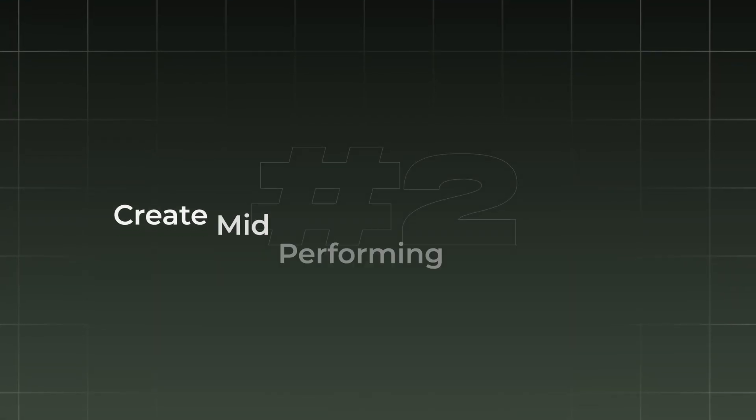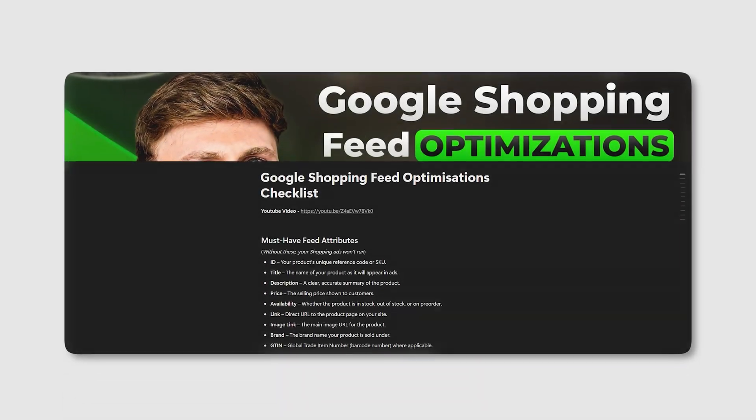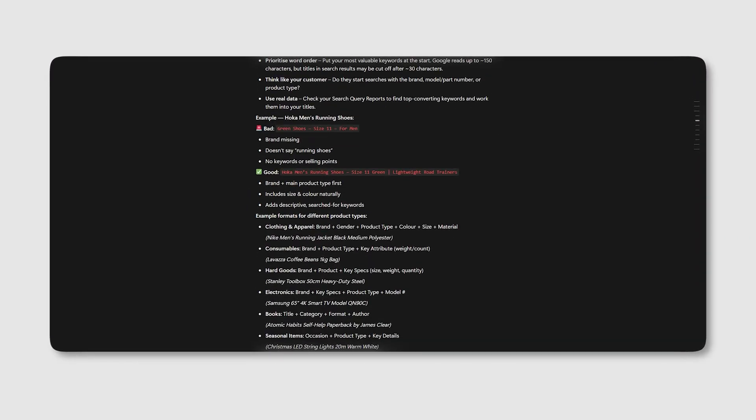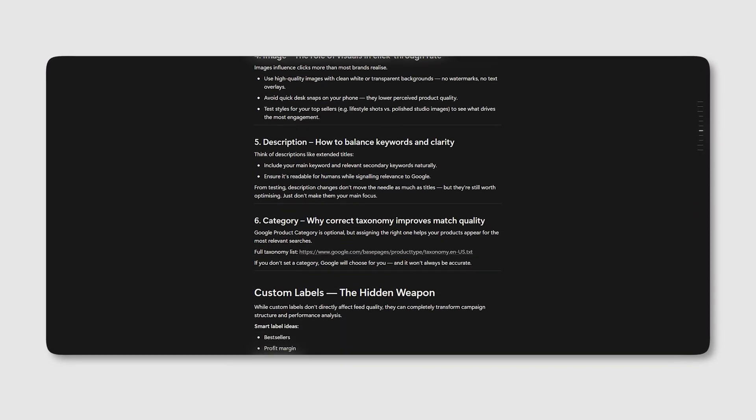Number two is your mid-performing campaign. Create a new Performance Max for this category and let it run with no target ROAS so it can learn as quickly as possible. Once you have the benchmark data, begin layering in a target ROAS and then start heavily testing offers, assets, and promotions — ultimately trying to improve the performance of these mid-performing products. Combine this with Merchant Center optimizations like promotions, title optimizations, and speed improvements.